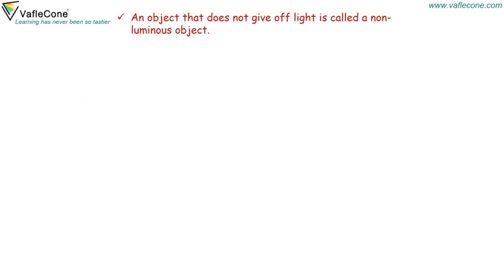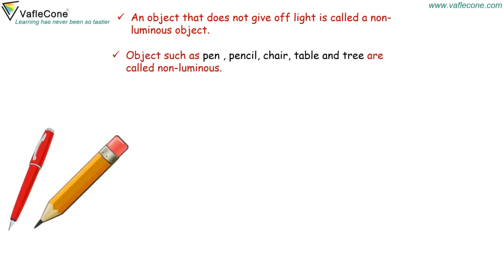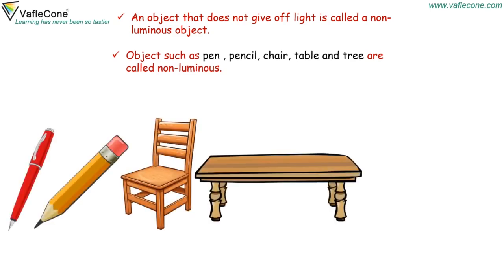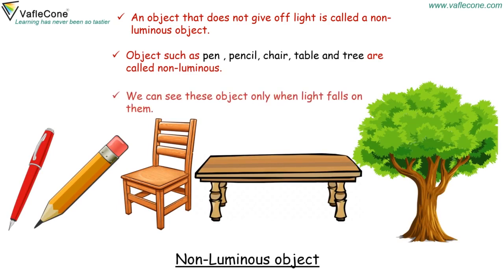An object that does not give off light is called a non-luminous object. Objects such as pen, pencil, chair, table and tree are called non-luminous. We can see these objects only when light falls on them.